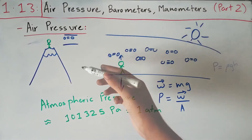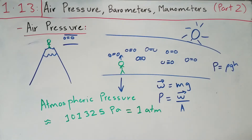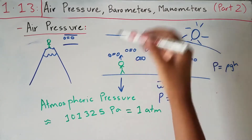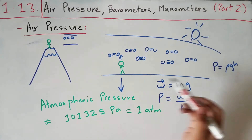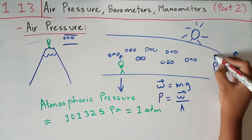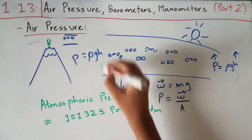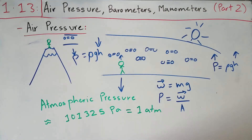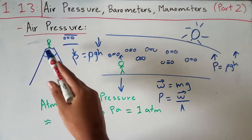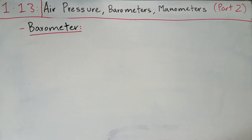A formula from the last video: pressure equals density times gravity times height. At sea level the height — the distance from the ground to where the atmosphere ends — is greater, so pressure is greater. At a higher altitude that height is reduced because you're closer to the top of the atmosphere, so pressure is lower. But how can you quantitatively measure air pressure?